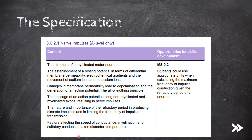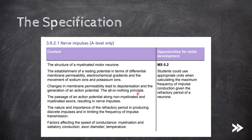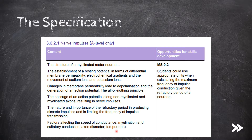Here's what we've got to know. First of all, we need to know the structure of a myelinated motor neurone. We then need to know how a resting potential is established in terms of differential membrane permeability, electrochemical gradients, and the movement of sodium and potassium ions. We need to know how changes in membrane permeability lead to depolarization and the generation of an action potential, as well as the all-or-nothing principle. We also need to know how an action potential passes along non-myelinated and myelinated axons, resulting in nerve impulses. We need to know about the nature and importance of the refractory period in producing discrete impulses and in limiting the frequency of impulse transmission. And finally, we need to know some of the factors which affect the speed of conductance, including myelination and saltatory conduction, axon diameter, and temperature.